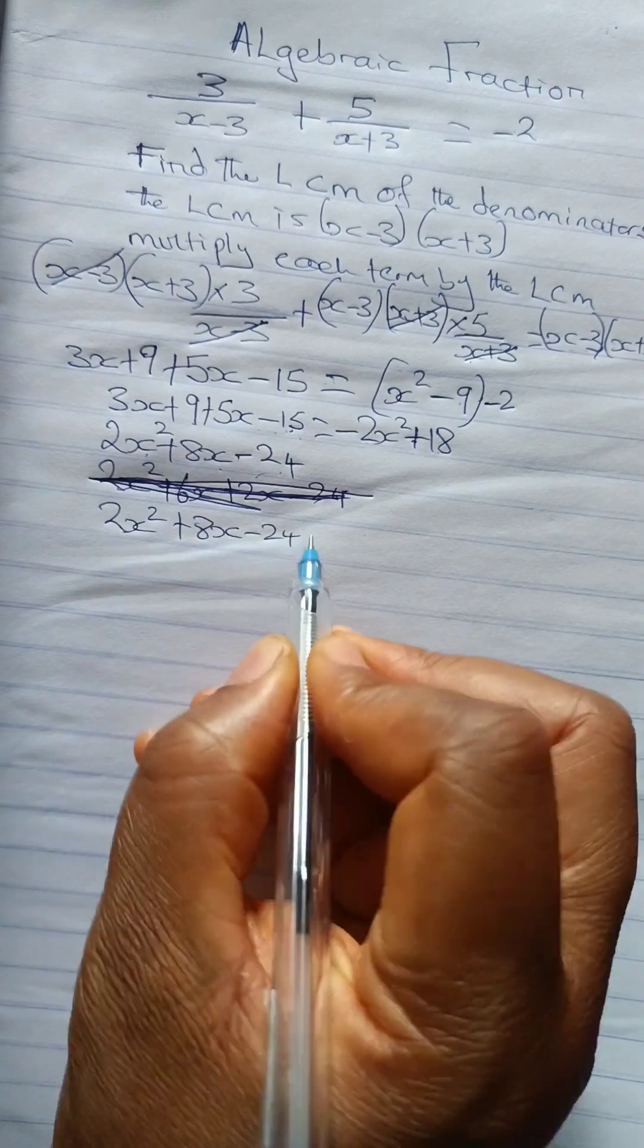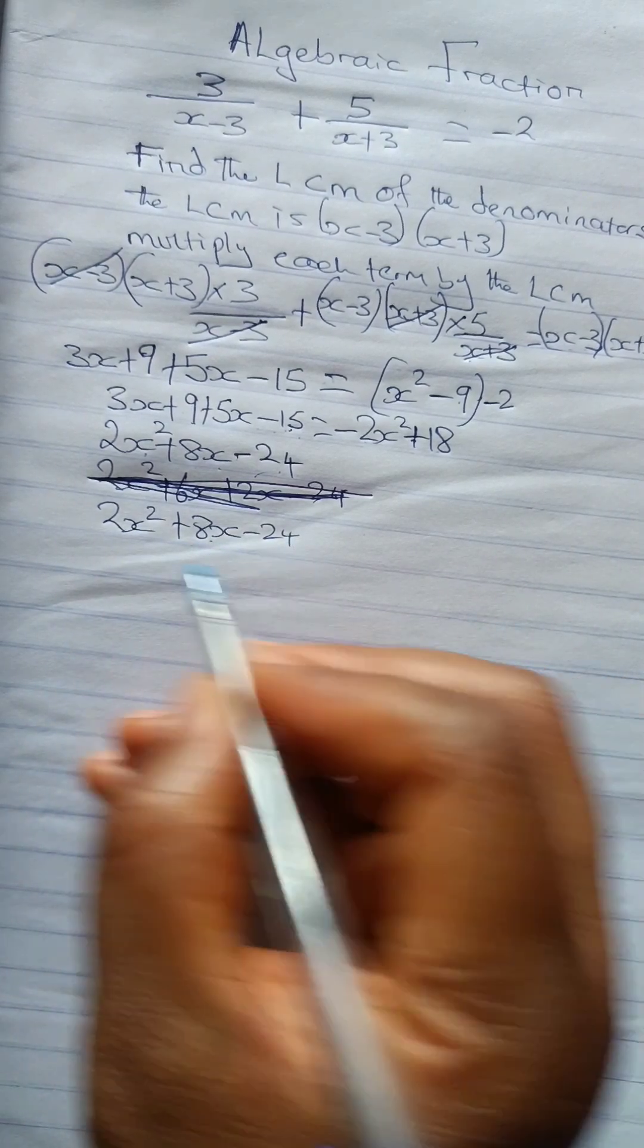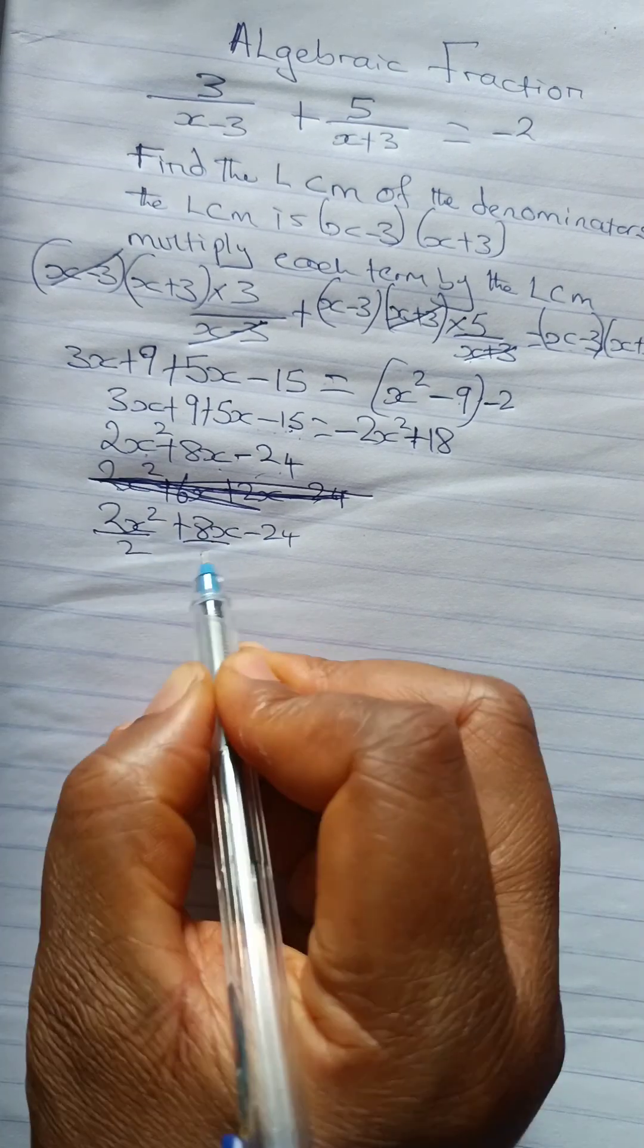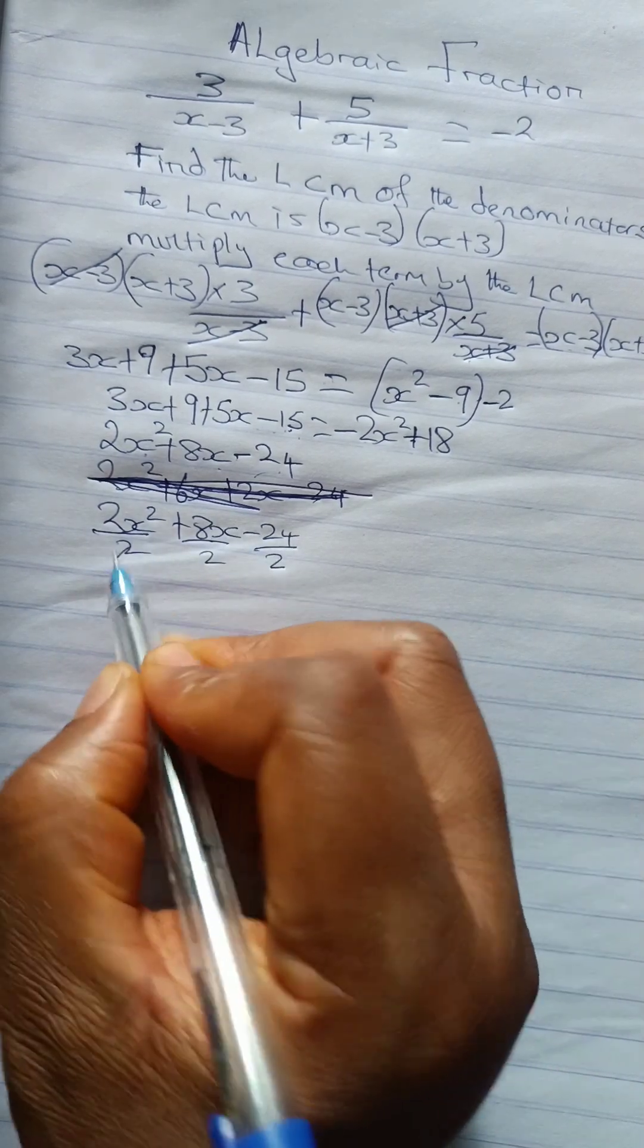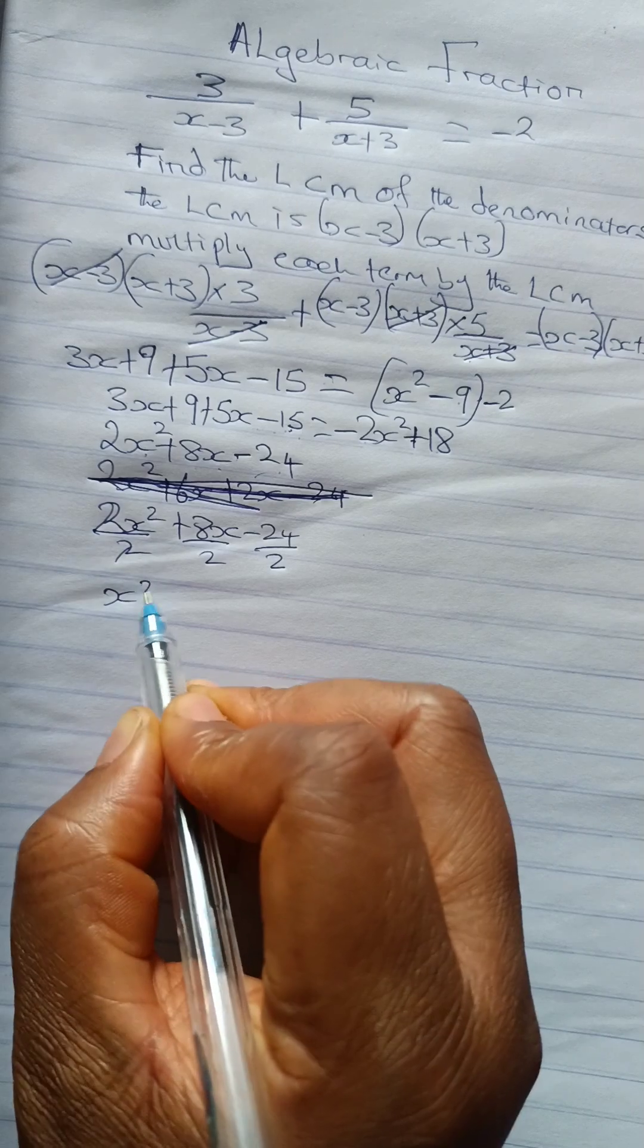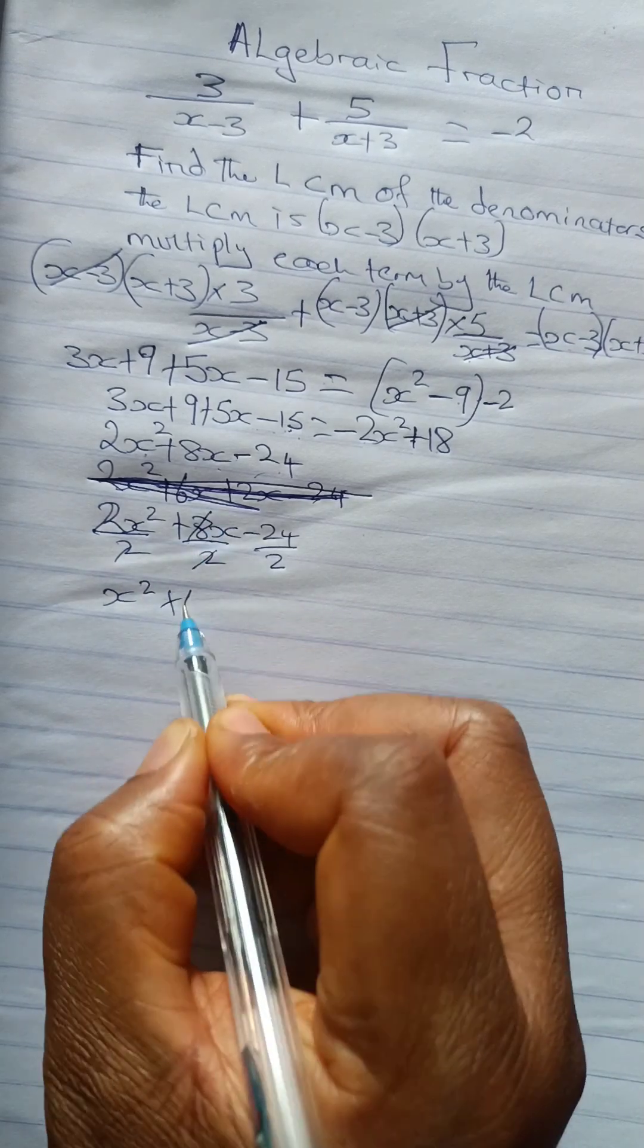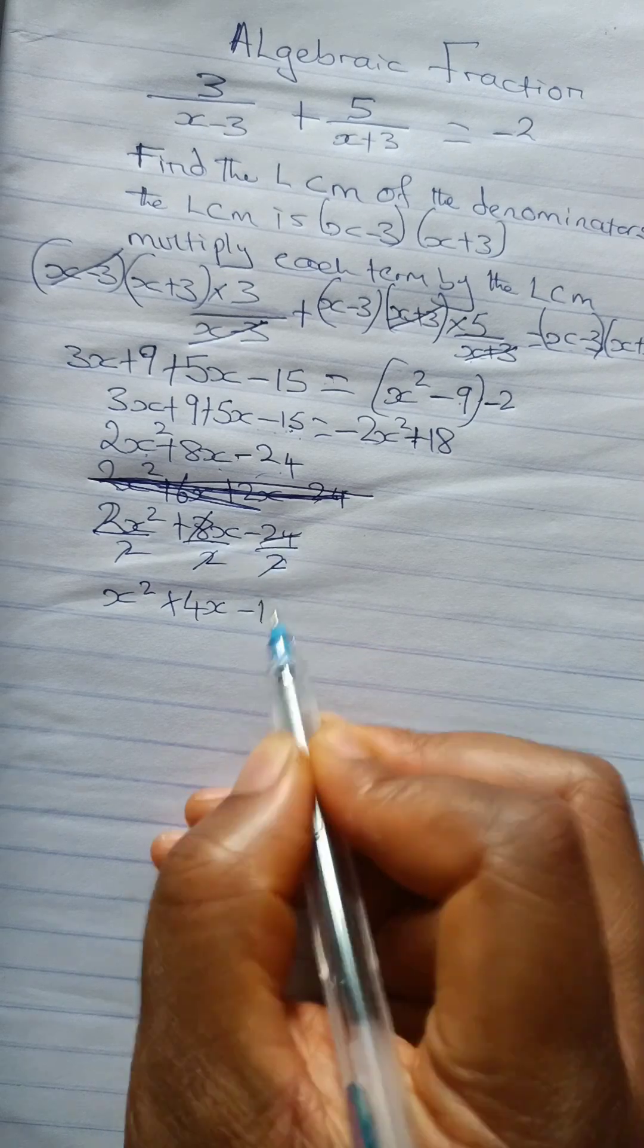Since we have something in common, 2 can divide this, 2 can divide this, 2 can divide this. So we divide through by 2. So when we divide, we have x squared plus 4x minus 12.